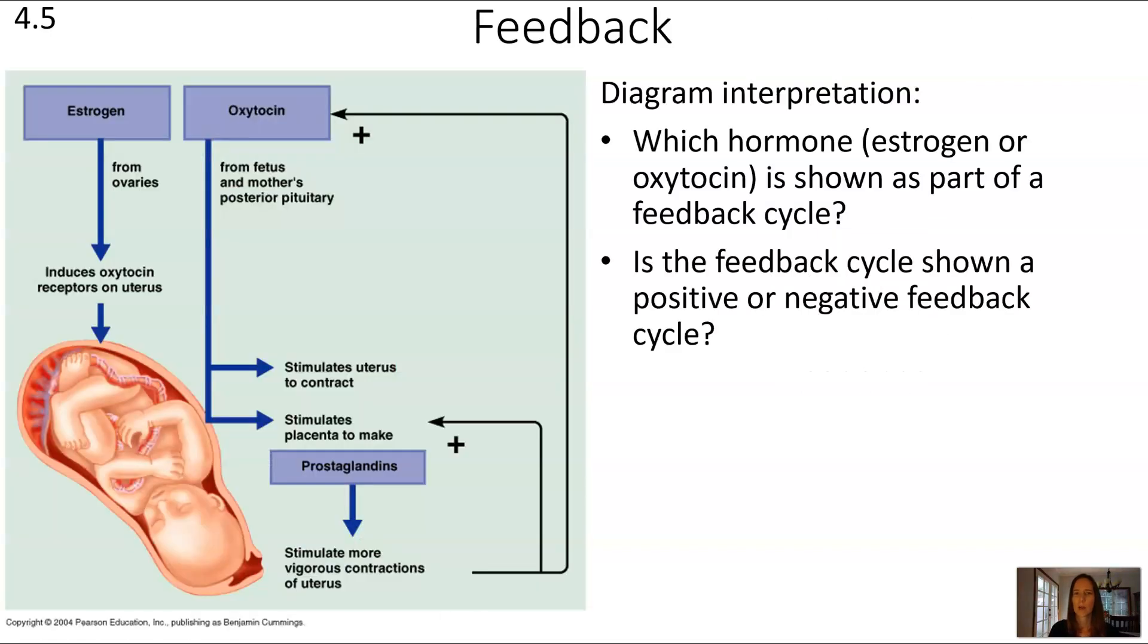Here we have a diagram of a specific situation, and I want you to look for a feedback cycle. Take a look at both estrogen and oxytocin. One of them is involved in a feedback cycle, and one of them isn't on this diagram. Which one is shown as part of a feedback cycle? And also, is the feedback cycle that is showing a positive or negative feedback cycle?